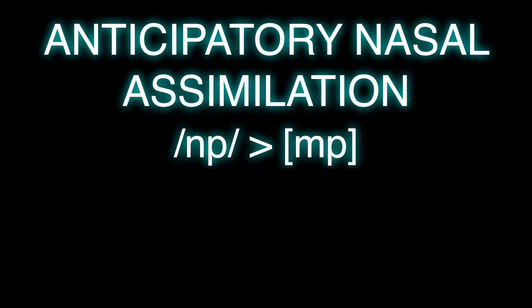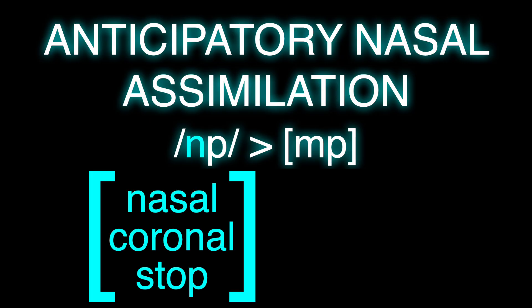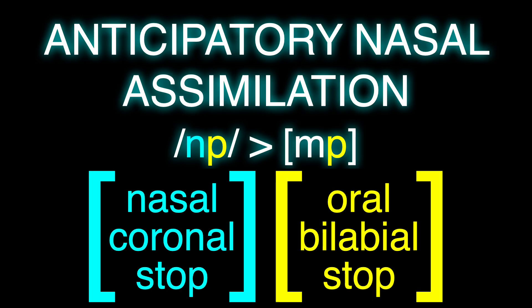An N is, for example, nasal, coronal, and a stop — also voiced. The P that you see in both segments there is oral, bilabial, and a stop, and not voiced. What happens is that in this sequence, the first element becomes a little bit more like the second element. It's still nasal, it's still a stop, it's still voiced, but it moves from coronal to bilabial to be more like the thing next to it.